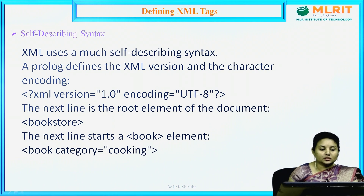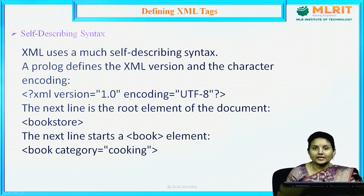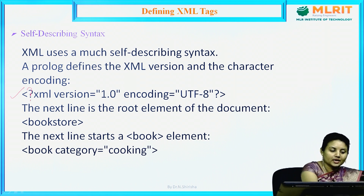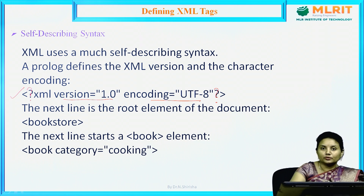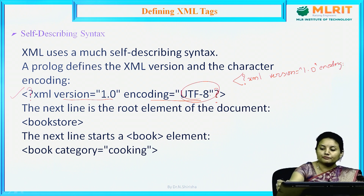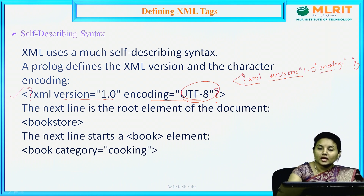XML uses self-describing syntax — whatever tags you write extend to give information. A prologue defines the XML version and the character encoding. The prologue starts and ends with a question mark. The XML version is set to 1.0 and encoding to UTF-8. In this prologue, the element is XML itself, version is an attribute, and encoding is also an attribute.